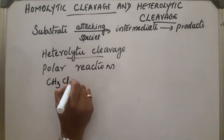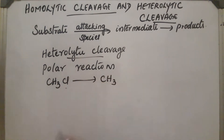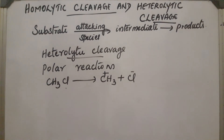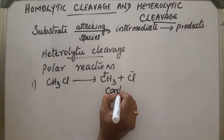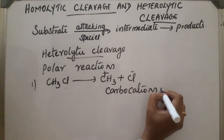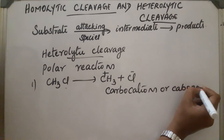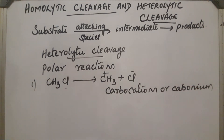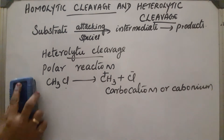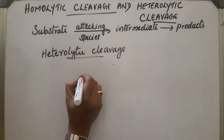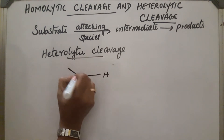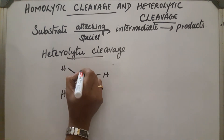For example, CH3Cl undergoes heterolytic cleavage. The electron pair shifts towards chlorine, which is highly electronegative, forming CH3+ and Cl−. CH3+ is called a carbocation, also known as a carbonium ion. The shape has three hydrogen atoms attached with a positive charge.